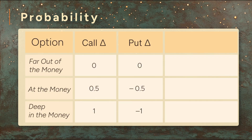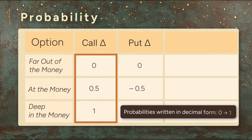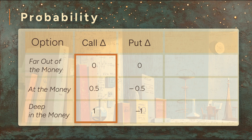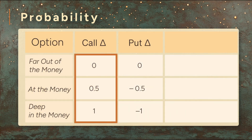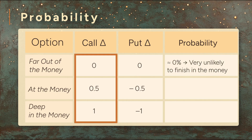Now let's put it all together and talk about delta as more than just a sensitivity measure. For call options, delta ranges from 0 to 1. This may remind you how probabilities written in decimal form also vary from 0 to 1 — and that's more than a coincidence. In addition to being a derivative, delta is also an approximation of the probability that an option will finish in the money. If a call is far out of the money, delta is about 0 — roughly a 0% chance. If it's deep in the money, delta is near 1 — roughly a 100% chance. At the money, delta is about 0.5 — a 50-50 shot.